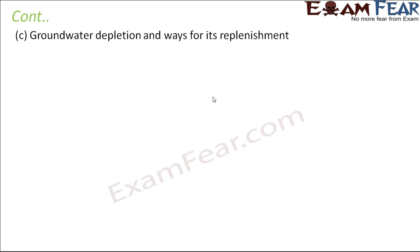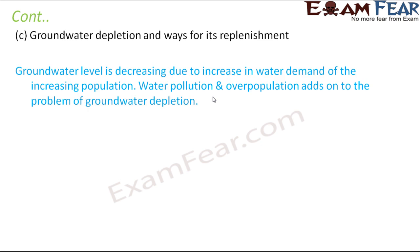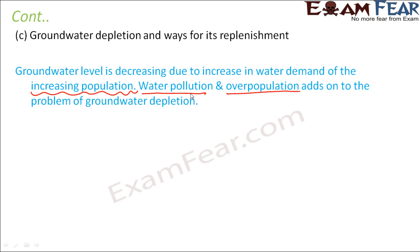Groundwater depletion is caused primarily by overuse due to the increasing demands of a growing population. Since population is increasing, more water is required, so groundwater is being used up. Water pollution also adds to the problem of groundwater depletion — overpopulation is both a cause of increased demand and a cause of water pollution, and together these result in depletion of groundwater.